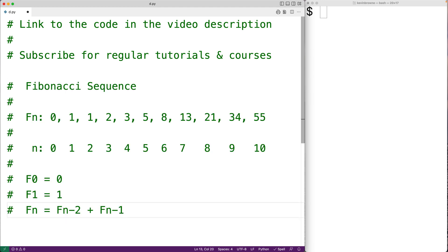So the Fibonacci sequence is this sequence of numbers here: 0, 1, 1, 2, 3, 5, 8, 13, 21, and so on forever.